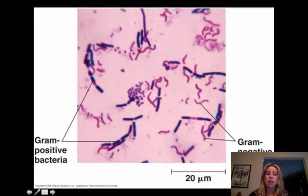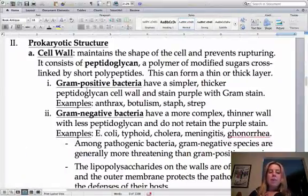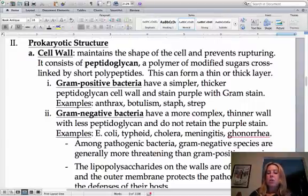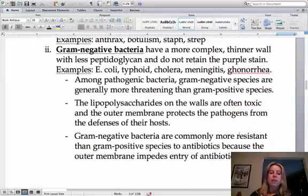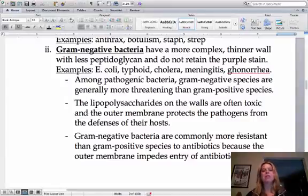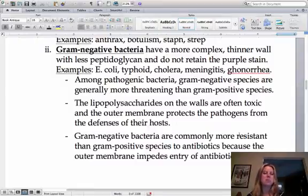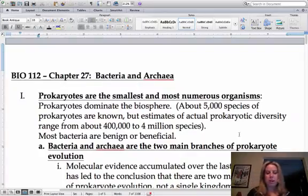Examples of gram positive bacteria include anthrax, botulism, staph infection, and strep. Examples of gram negative include E. coli, typhoid, cholera, meningitis, and gonorrhea. In general, gram negative ones tend to be a little more threatening because they're harder to fight with antibiotics — they have that outer layer, so they require a very specific antibiotic. With gram positive bacteria, you can use a more general antibiotic for many different types.